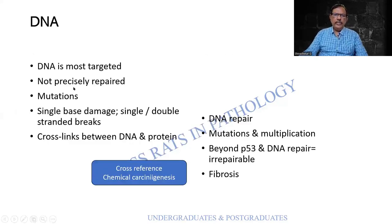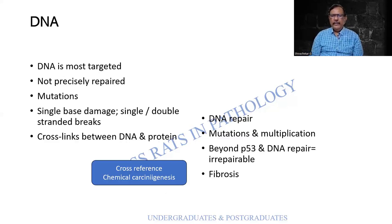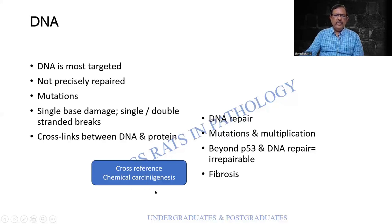The DNA, as mentioned, is the most targeted and is not precisely repaired — it can be subject to mutations. The damage can be single-base or double-base, and you get a break in both strands. Cross-links between DNA and protein are usually present. Normally, as in chemical carcinogenesis, there can be DNA repair; otherwise, there are mutations, multiplication, and beyond a period of repair, carcinogenesis. Fibrosis also affects both the vasculature and the lung.